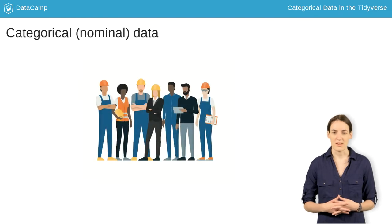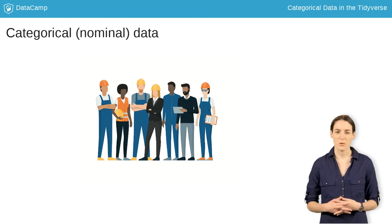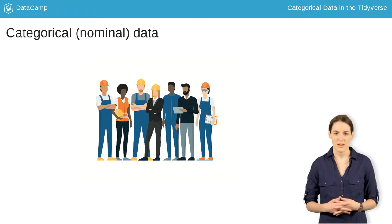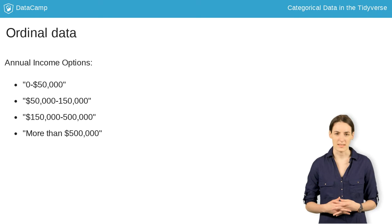One example of categorical data is a person's occupation. You might have a survey that has people pick their occupation from a list of 30, such as doctor, teacher, or engineer, with an extra category for other. We could think of ways to order this data, such as by median salary or years of education needed, but they don't have an inherent order.